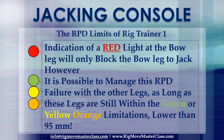A red light at the bow leg will only block the bow leg from jacking. However, it is possible to manage this RPD failure with the other legs, as long as these legs are still within the green or yellow-orange limitations — lower than 95mm.